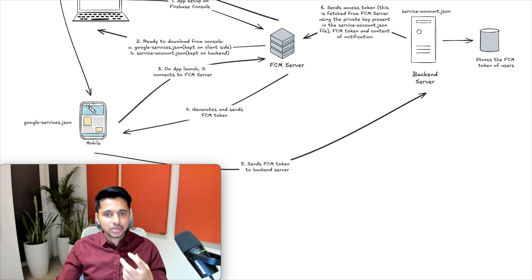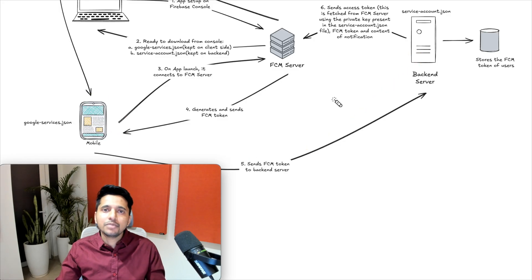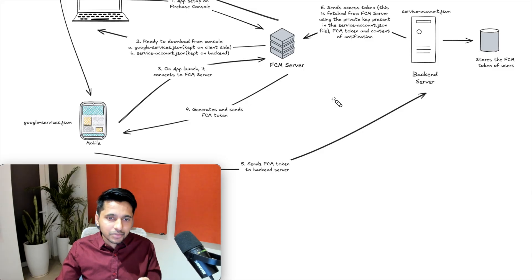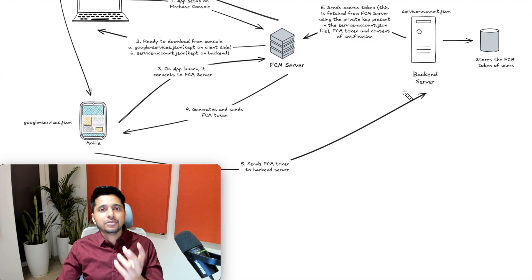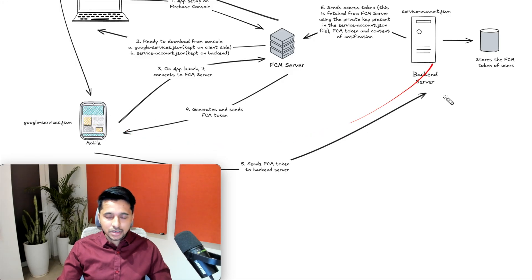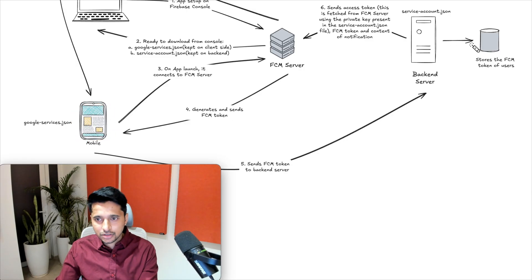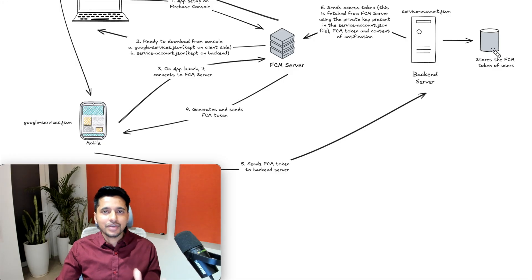Now that we have the FCM token on the client side — because Google has given it to us — it is our responsibility to send that token to our own backend server. Our backend developer will provide a POST API so that we can make an HTTP POST request with the FCM token. The backend server will then store the token in a database table, corresponding to the user ID.